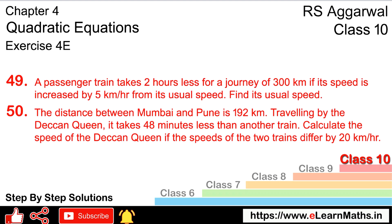Let's do question number 49 of exercise 4E on quadratic equations. A passenger train takes 2 hours less for a journey of 300 km if its speed is increased by 5 km per hour from its usual speed. Find its usual speed.